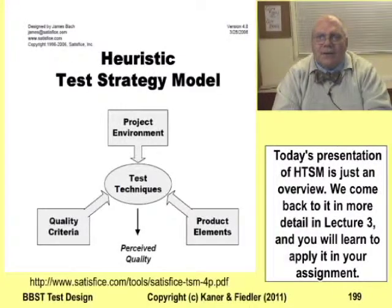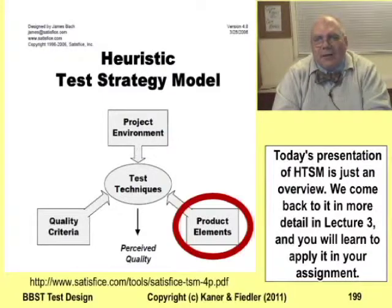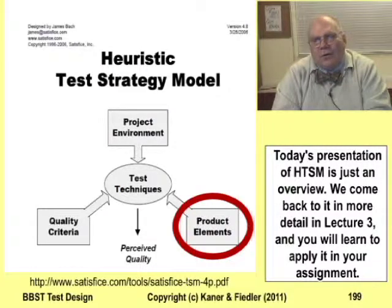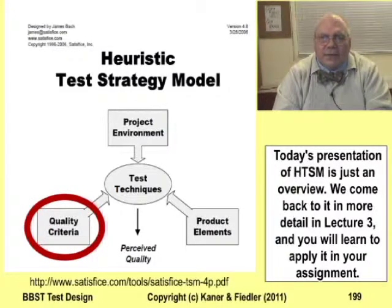James Bach extended HAZOP-style analysis to testing in a more complex way than you'll see in the academic papers. As with traditional HAZOPs, part of the analysis involves identifying the components of the system. Bach calls these product elements. For example, all the program's features are product elements, and so are all the variables, and so are all the error messages. Bach also listed design objectives, which he calls quality criteria.